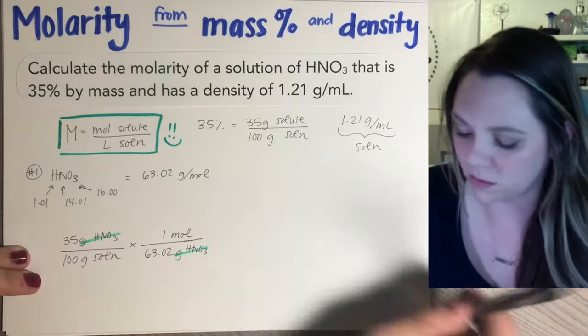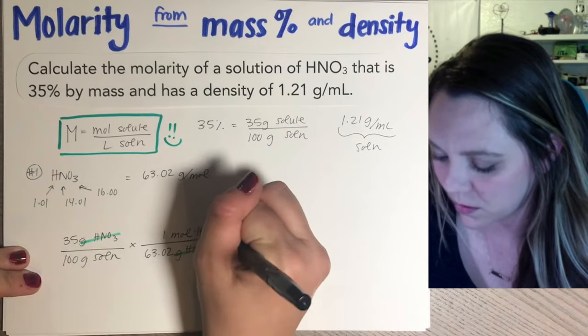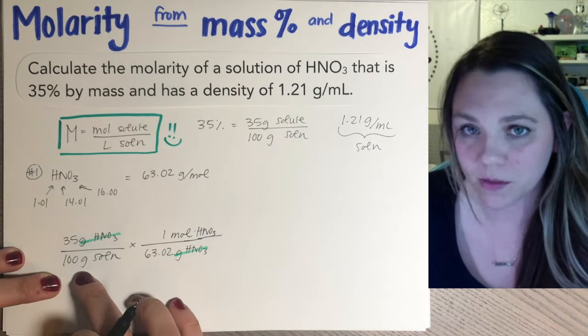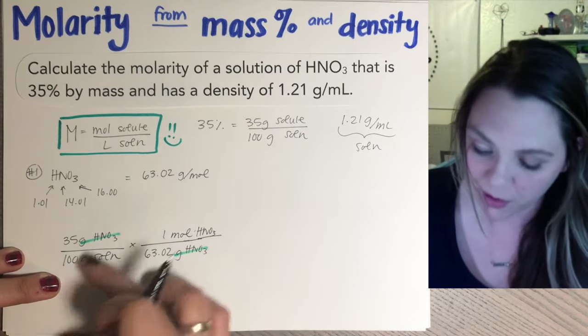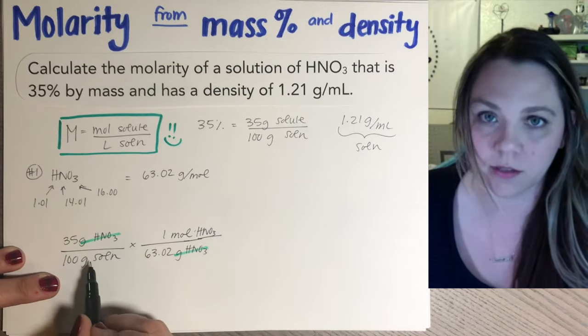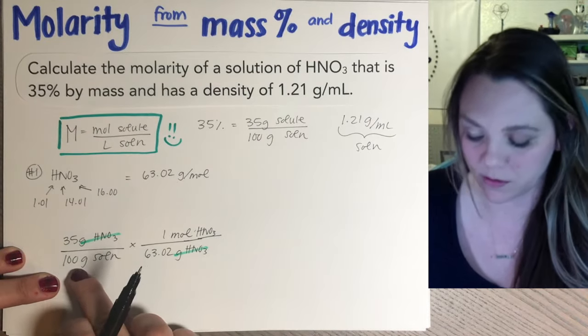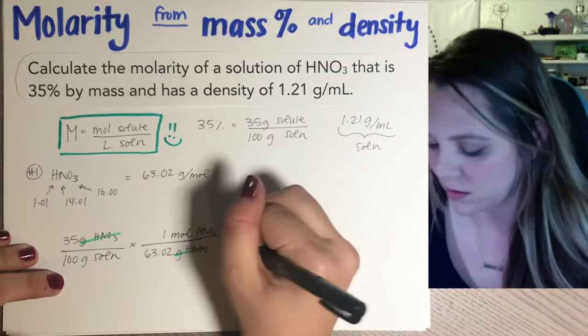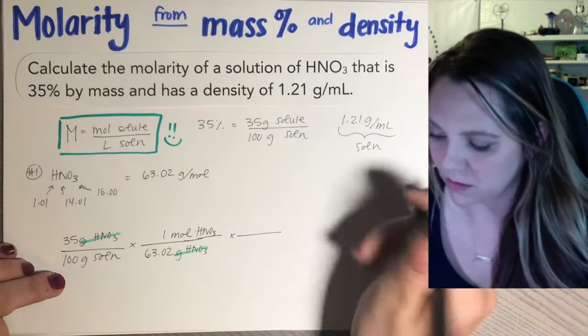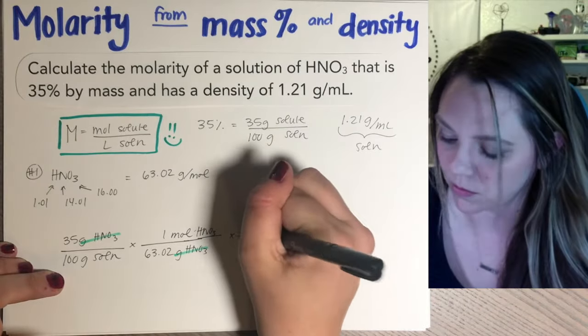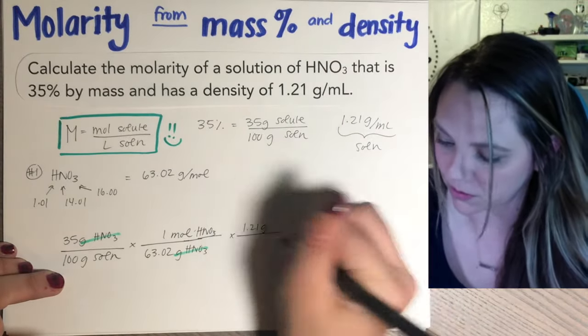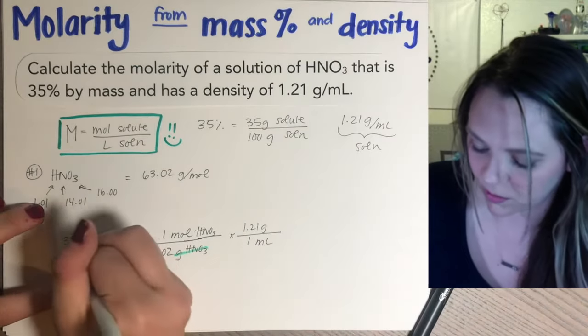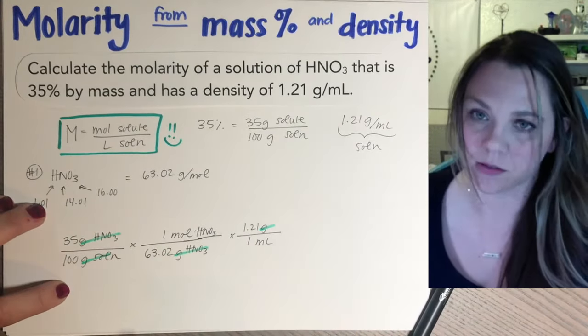Cool. So now I'm going to be in moles of nitric acid and I'm dividing by grams of solution, which is bad. I don't want moles per gram. I want moles per liter. So now I've got to convert away from grams. Well, how do I convert away from grams? I use my density. I say times and you just literally multiply by density. So 1.21 grams of your solution for every one milliliter of your solution. And grams of solution, grams of solution will cancel.